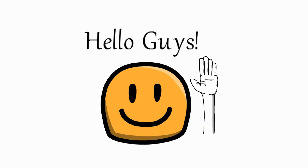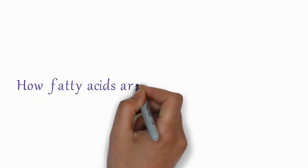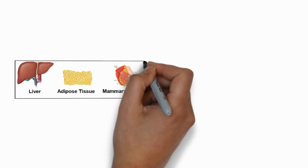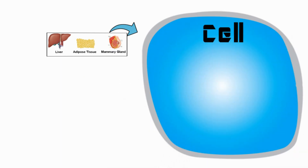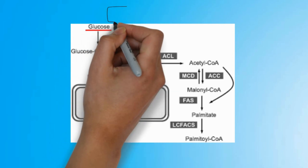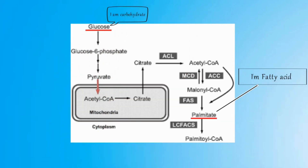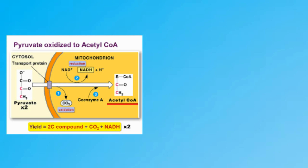Today I would like to explain how fatty acids are synthesized in our body. This predominantly occurs in cells of the liver, adipose tissue, and mammary glands. Pyruvate from glycolysis is an important product for the conversion of carbohydrates into fatty acids. This occurs when pyruvate converts into acetyl CoA in a mitochondrion; however, this cannot occur directly.